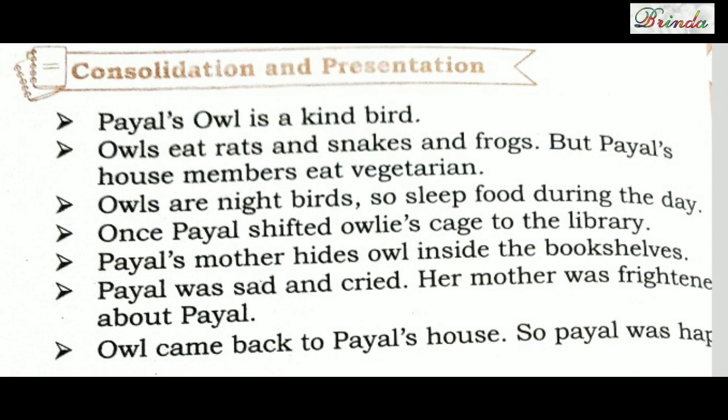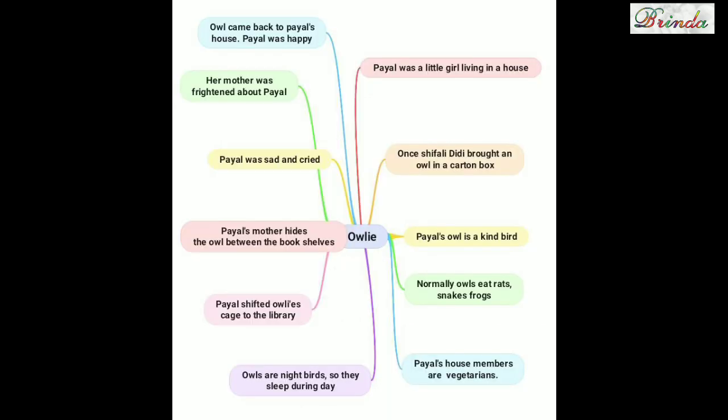Now we will do the Mind Map. Payal was a little girl living in a house. Once, Shifali Didi brought an owl in a carton box. Payal's owl is a kind bird. Normally, owls eat rats, snakes, and frogs. But Payal's house members are vegetarian. Owls are night birds, so they sleep during the day.